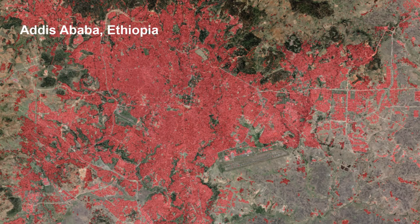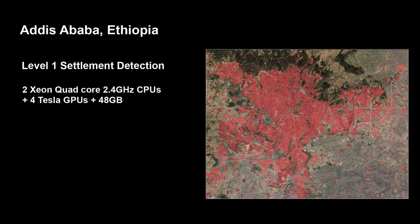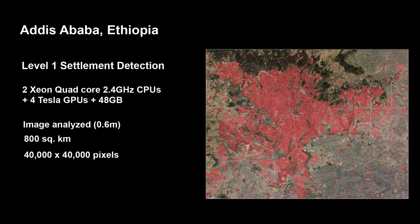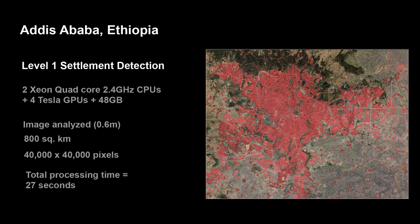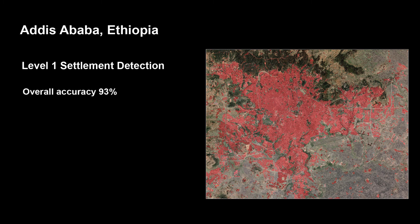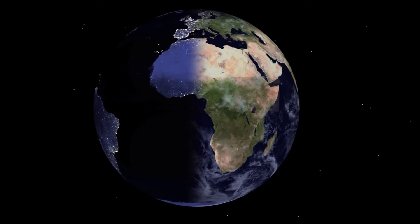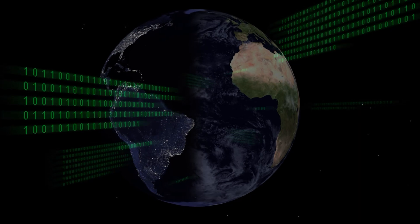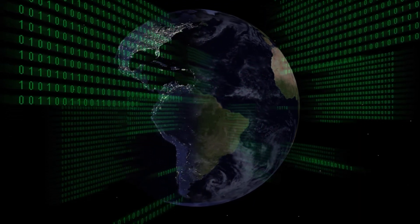This settlement extraction of Addis Ababa, Ethiopia, performed on a high-end desktop workstation, was produced from sub-meter resolution satellite images covering 800 square kilometers — some 40,000 by 40,000 pixels — which were analyzed and settlements extracted in under 30 seconds. The overall accuracy of the detection output was 93 percent, with 89 percent accuracy in detecting areas of settlements and 94 percent accuracy in detecting areas of non-settlement. Analysis and characterization at this level of speed and accuracy has big implications for scaling up the process to world scale.